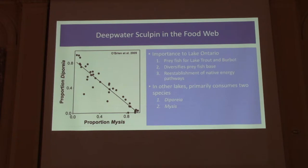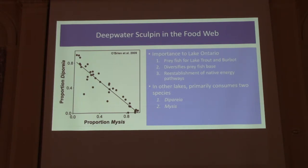To get to a deepwater sculpin — I just mentioned energy pathways — deepwater sculpin are traditionally built out of diporeia and mysis. Diporeia, if you don't know, are an amphipod, and mysis are a tiny shrimp; both live fairly deep in the Great Lakes, or have until recently. Diporeia is not doing terribly well. You can see the proportion of diporeia and proportion of mysis in deepwater sculpin diets are strongly inversely related — animals with lots of mysis do not have diporeia, and vice versa. These are really high values: up to 80% or more of diet can be diporeia or mysis. These animals are really dependent on those two groups.